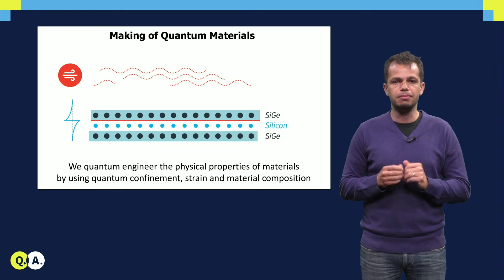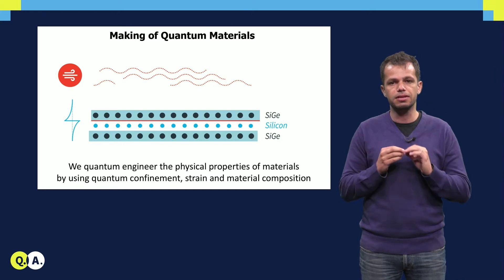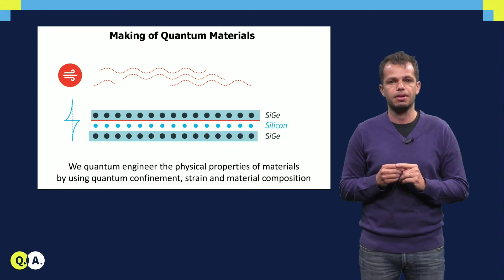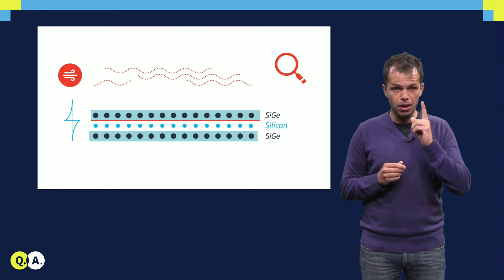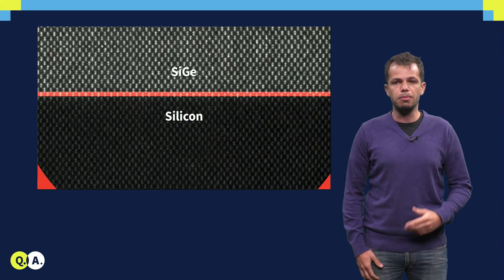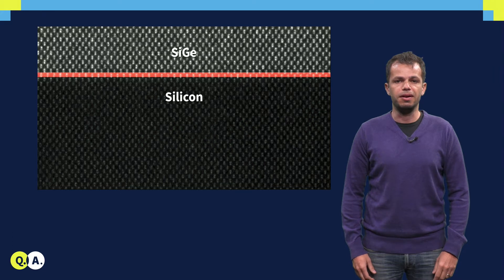Qubits can then be made by isolating by electric fields one electron spin at that interface. If you want to isolate one single electron spin and make it a qubit, you need to know the properties of the material very well.